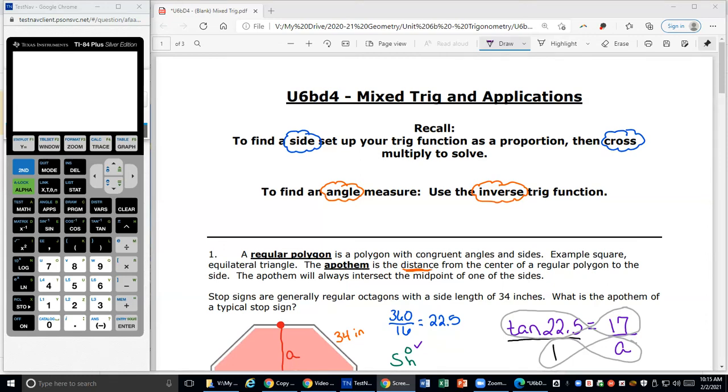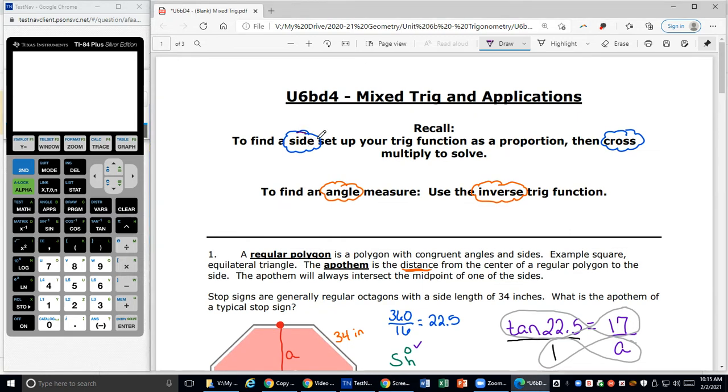Hi, welcome back to part three. We're going to look at angle of elevation and depression in this video. But before we do, let's remind ourselves: if we're looking for a side, we want to cross multiply. And when we're looking for an angle, we're going to inverse. So keep that in mind—side cross multiply, angle inverse.